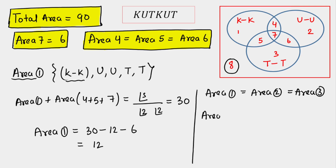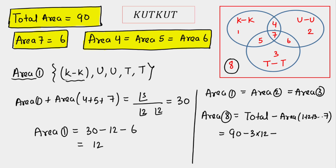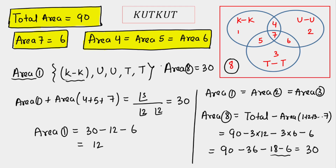Finally, area 8 = total area − (areas 1 through 7) = 90 − 3×12 − 3×6 − 6 = 90 − 36 − 18 − 6 = 90 − 60 = 30. So 30 is our final answer — the total number of words where no two alike letters are together.